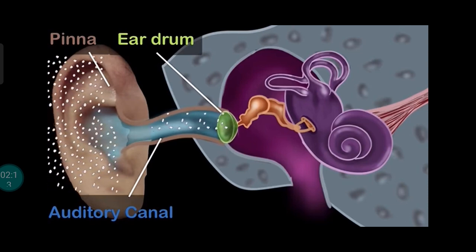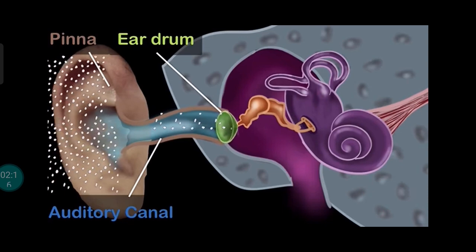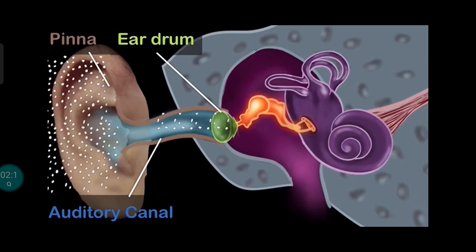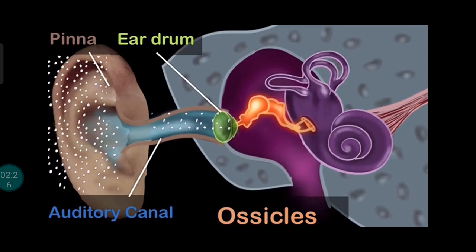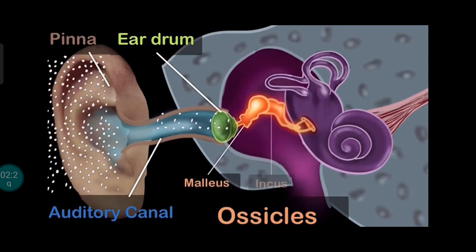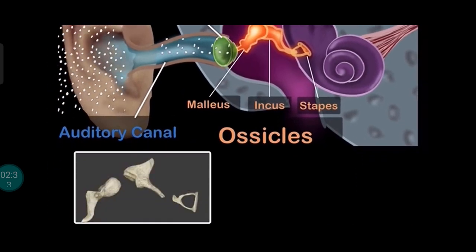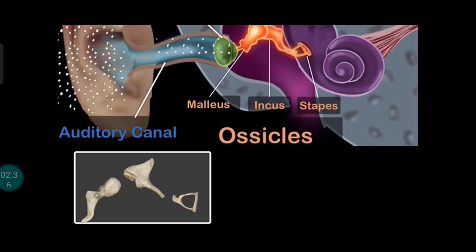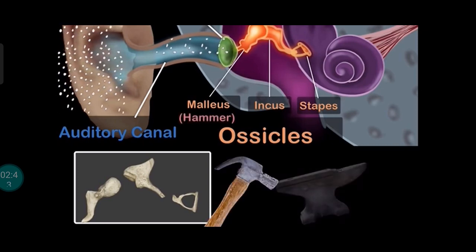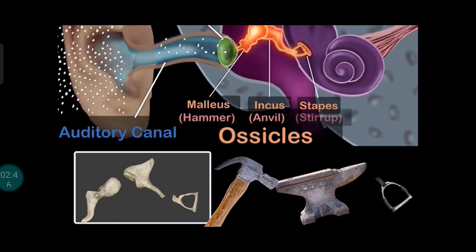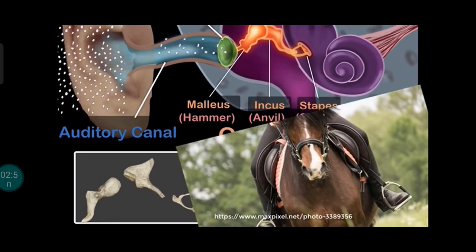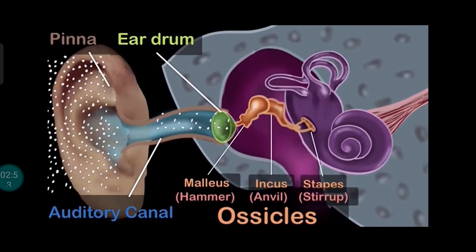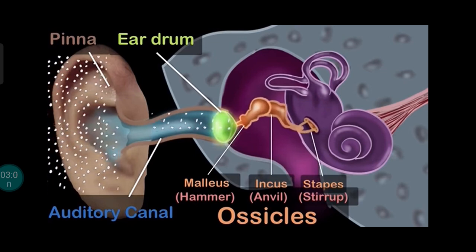This brings us to the middle ear. The middle ear consists of the three tiniest bones of the human body, together called the ossicles. They have pretty cool names — the malleus, the incus, and the stapes. Because of their shapes, they're also commonly called the hammer, the anvil, and the stirrup — a stirrup being where you rest your feet when you're riding a horse. As the eardrum vibrates, the ossicles also start vibrating, transferring the vibrations from the eardrum to the inner ear.